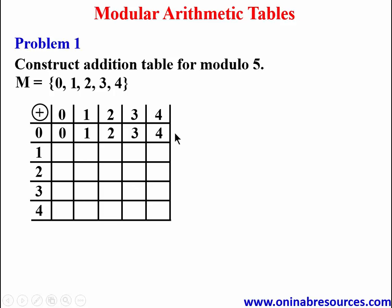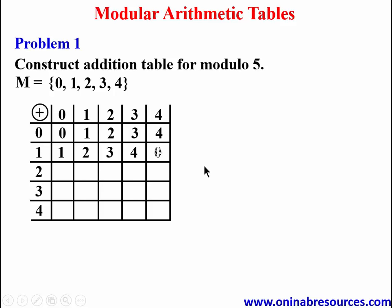We go to the second row: 1 plus 0 gives 1, 1 plus 1 gives 2, 1 plus 2 gives 3, 1 plus 3 gives 4. And 1 plus 4 gives 5 — remember there is no 5 in modulo 5. We either divide 5 by 5 and take the remainder 0, or say 5 minus 5 which gives 0. So we record 0.